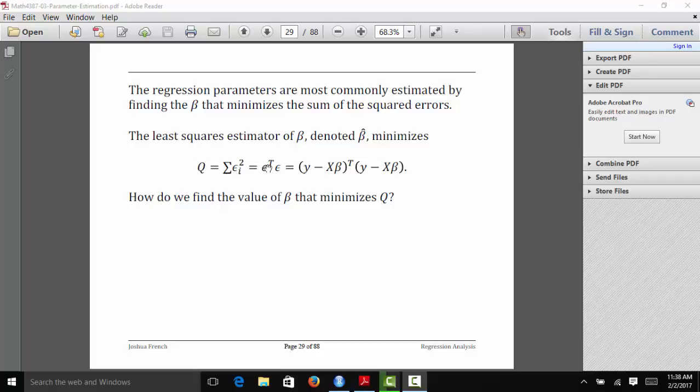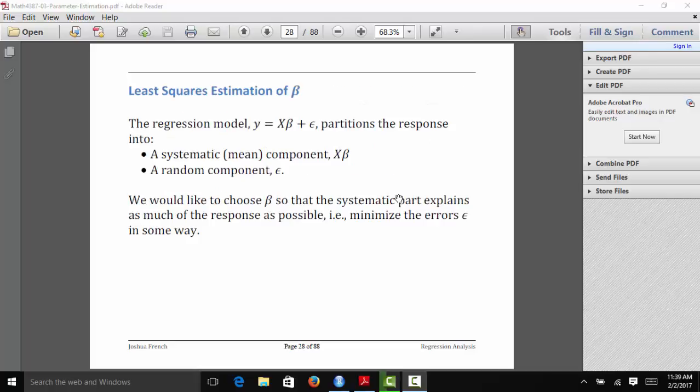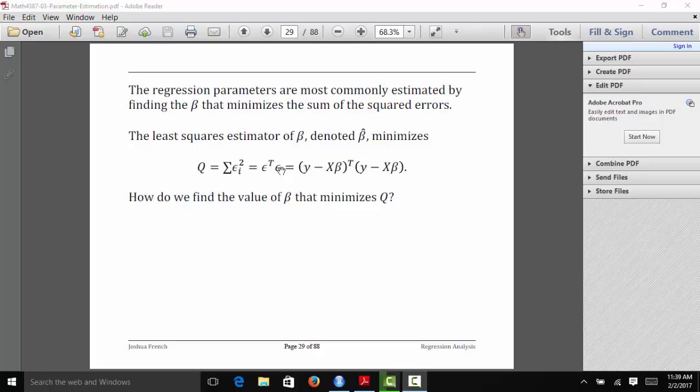In matrix notation, this is epsilon transpose epsilon. Epsilon, if we do a little algebra, is equal to y minus x beta. So epsilon transpose epsilon can be rewritten as y minus x beta transpose times y minus x beta. The question is, how do we find the value of beta that minimizes Q?